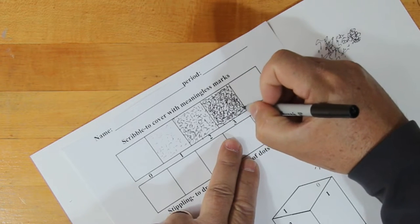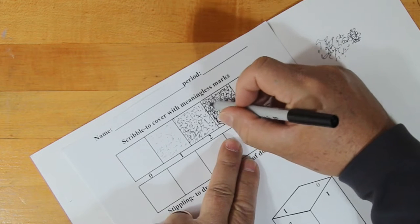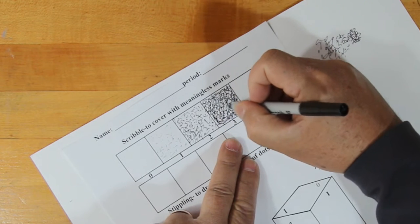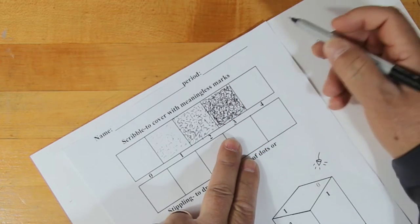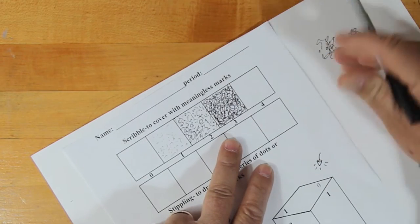You're literally scribbling. Just like when we doodle sometimes, and we just don't pay attention to what we're doing, we're just doodling. Here it's a little bit more controlled, because we're trying to create different values.